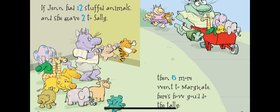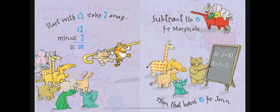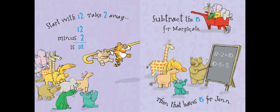If Jen had 12 stuffed animals and she gave 2 to Sally, then 5 more went to Mary-Kate, here's how you'd do the tally. Start with 12, take 2 away. 12 minus 2 is 10. Subtract the 5 for Mary-Kate, then that leaves 5 for Jen.